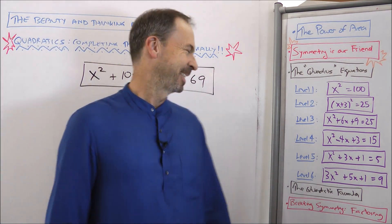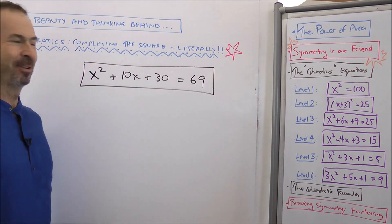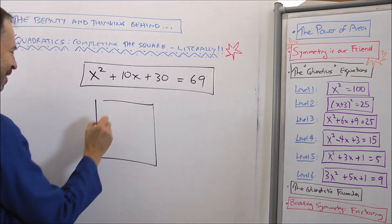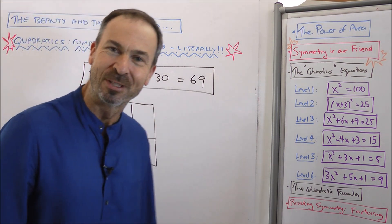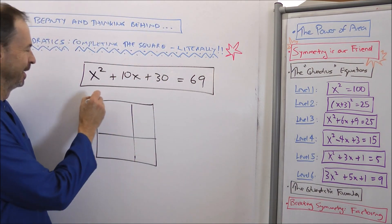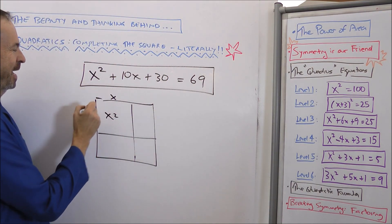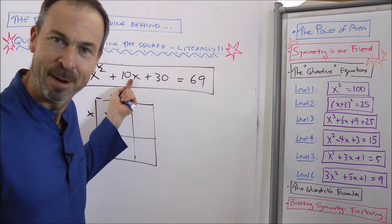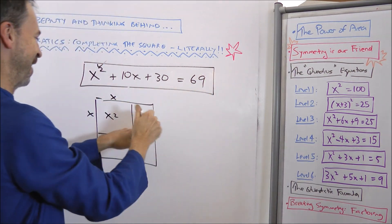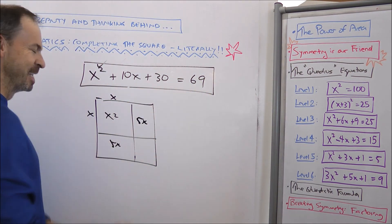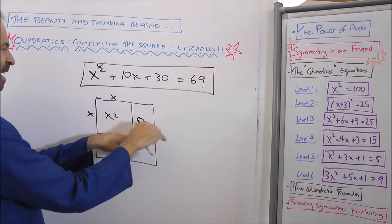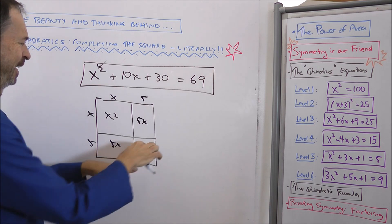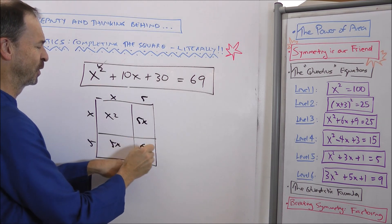Okay, I'm excited. Let's solve x squared plus 10x plus 30 equals 69. Here goes. Let me draw the square — I love the quadris method. The x squared piece, yes, from x times x. Then 10x — keep it symmetrical, symmetry is my friend — 5x and 5x. Something times x makes 5x, must be 5. Something times x makes 5x, must be 5. 5 times 5 means I want a piece of 25.